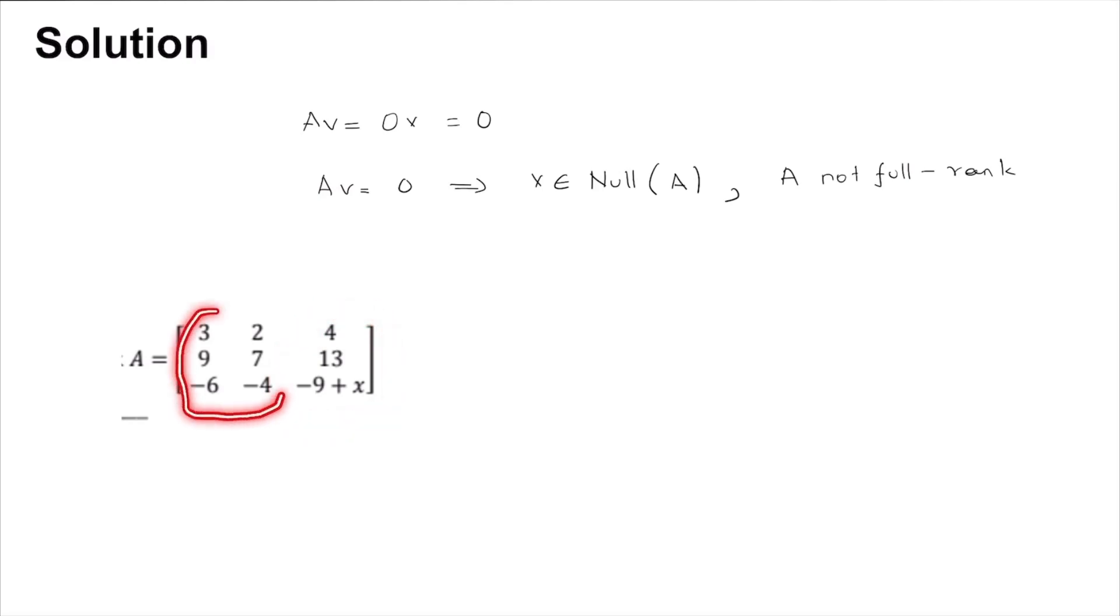That is, I should be able to give this column vector as a linear combination of these two. So let us first try and find out what are the c1 and c2 such that the 4, 13 column vector is a linear combination of the other two. That is, 4, 13 are equal to 3c1 plus 2c2 and 9c1 plus 7c2.